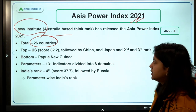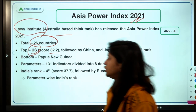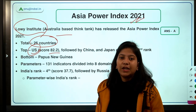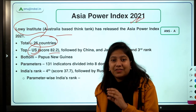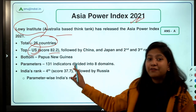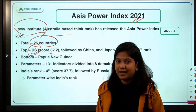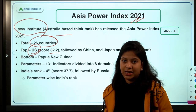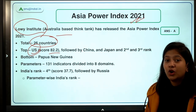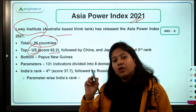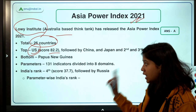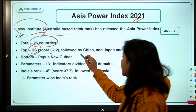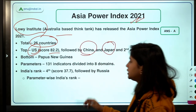The Asia Power Index is released by the Lowy Institute, an Australian think tank — the only organization that releases this index. It assesses 26 countries and measures which countries have the most influence and power in the Asian region — not just countries geographically in Asia, but any country with major influence. The US holds the top position, followed by China and Japan in second and third, with India at fourth.